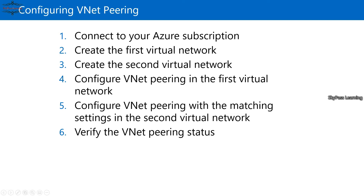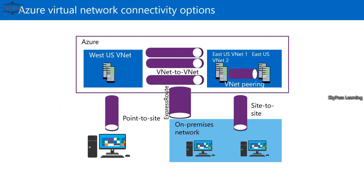We can also configure VNet-to-VNet VPN and VNet peering. For VNet-to-VNet, you create a gateway with configuration, then add a second virtual network and its gateway to the same VPN. For VNet peering, you configure pairing with the first virtual network and associate the matched gateway. Authentication options include certificate-based authentication as well as Azure AD directory-based user authentication for point-to-site connectivity.